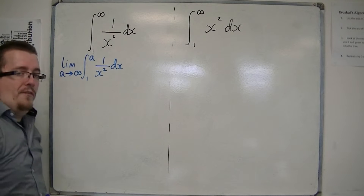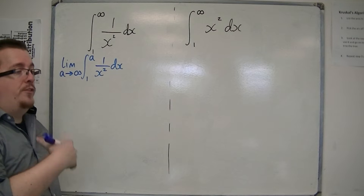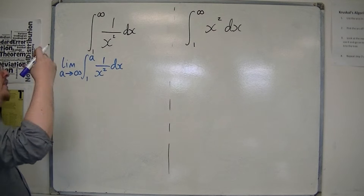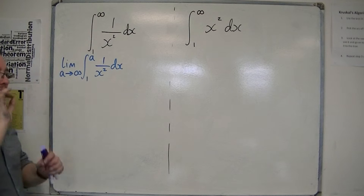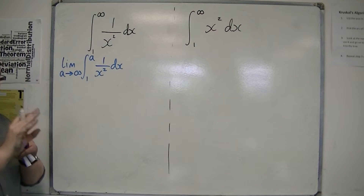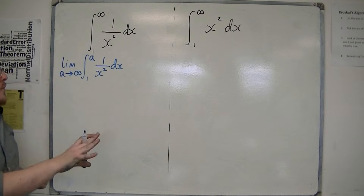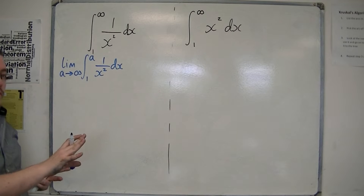So instead of evaluating from 1 to infinity, I'm going to evaluate from 1 to a, and let a tend to infinity. This is the process that we go through.